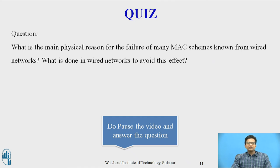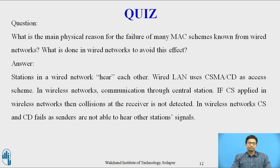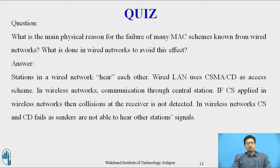You can pause the video and answer this question: What is the main physical reason for the failure of many MAC schemes known from wired networks, and what is done in wired networks to avoid this effect? In wired networks, stations can hear each other and wired LAN uses CSMA/CD as an access scheme. In wireless networks, stations communicate with a central station but not with each other. If carrier sense is applied in wireless networks, collision of data packets at the receiver is not detected, as carrier sensing takes place at the sender. So in wireless networks, carrier sense and collision detection fail because senders are not able to hear other stations' signals or collisions at the receiver.